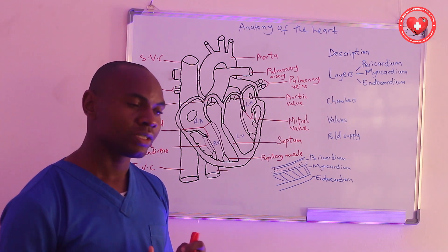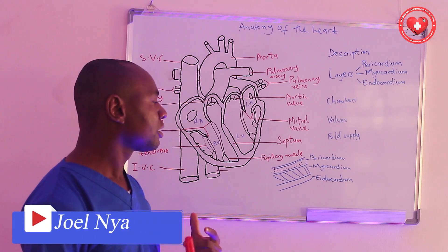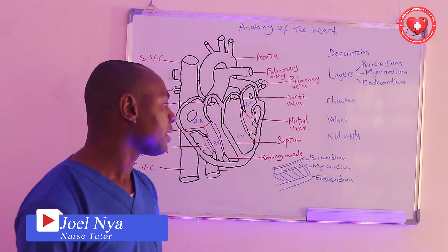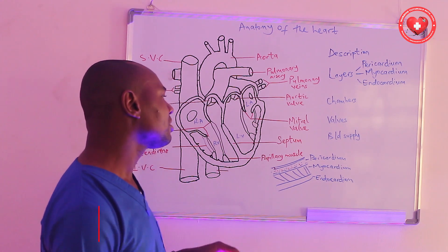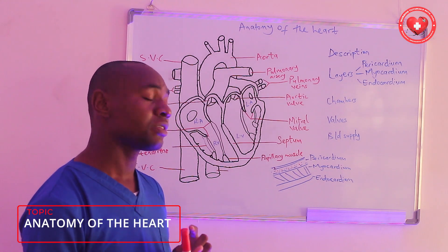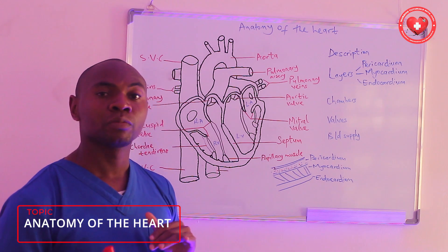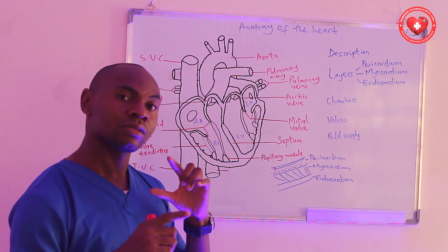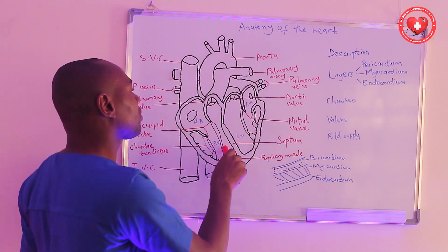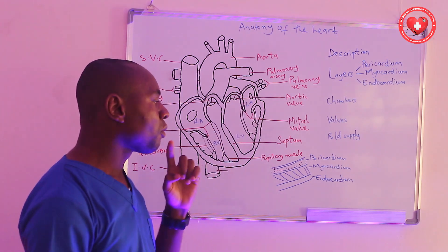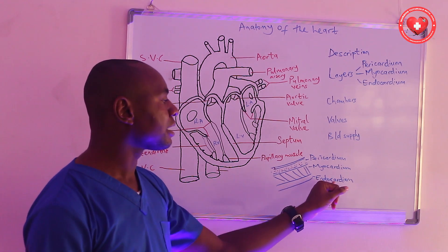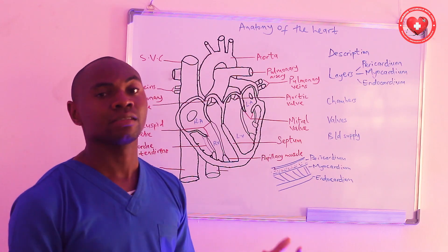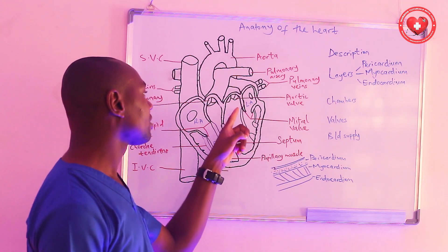The myocardium is also responsible for the initiation and conduction of electrical impulses, making it a very vital and important layer of the heart. The third layer is the endocardium — the innermost layer of the heart. The endocardium is made up of simple smooth epithelium and it lines the inner layer of the heart. It also lines the valves of the heart, which is why whenever a disease affects the endocardium, such as endocarditis, there is every possibility that the valves of the heart will also be affected.